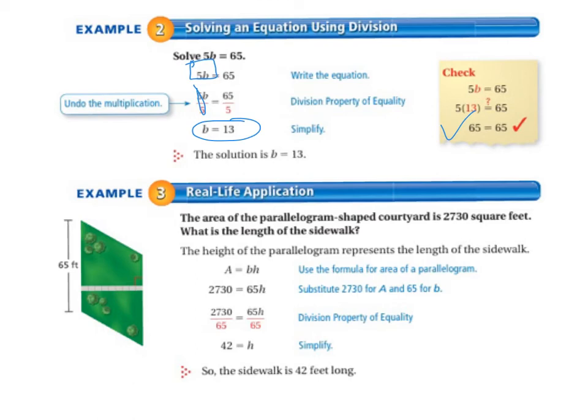Substitute 2,730 for area. So that's what we did over here on the left. And 65 for base. So that's the long side is the base. So we're solving for height. So since these two are multiplied together, we need to use the inverse operation of division to solve for H. So we divide both sides by 65.